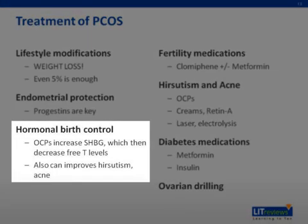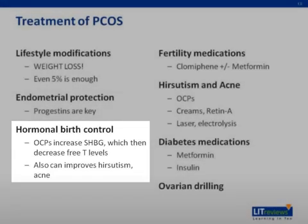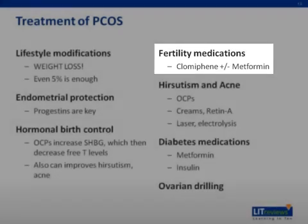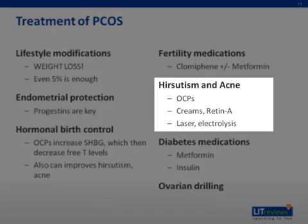Another common intervention is to give OCPs or oral contraceptives for PCOS. This is done because, first, it has enough progestin to protect the endometrium against cancer, and second, OCPs increase sex hormone binding globulin, which binds to androgens and decreases free testosterone levels to improve acne and hirsutism. When PCOS patients need to get pregnant, they usually require help. The most common way of inducing ovulation is the use of clomiphene citrate and metformin together. Hirsutism and acne are treated in a variety of ways, none of which are permanent; other treatments include lasers and electrolysis, and creams and retin-A are used for acne treatment.